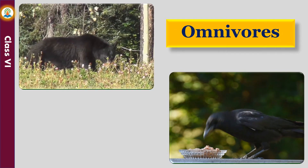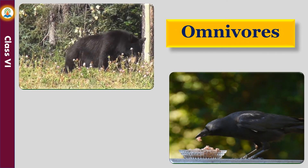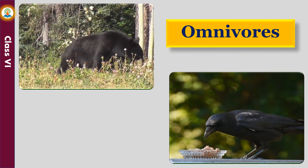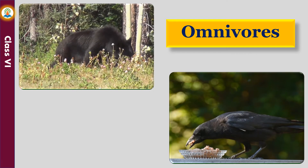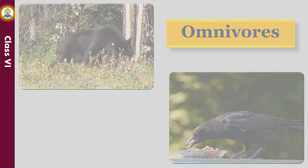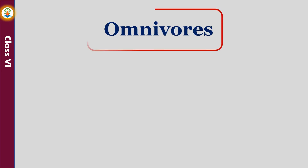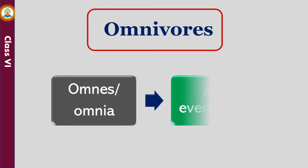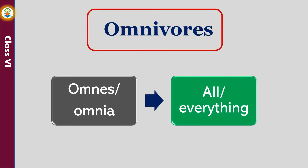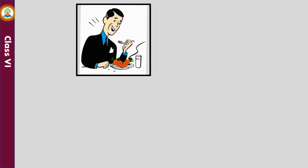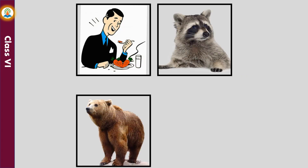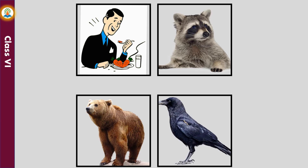Animals that eat both plants and animals are called omnivores. In Latin, 'omni' means all or everything. Human beings, raccoon, bears, and crows are examples of omnivores.